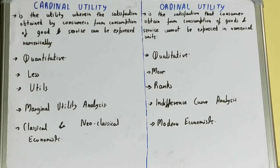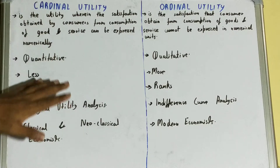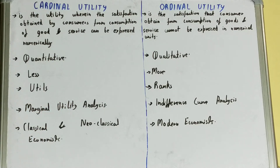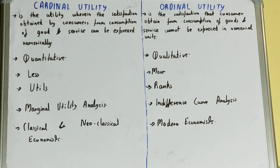If we talk about how realistic each is in a real environment, cardinal utility is very less possible in a real environment — that is, it is very less realistic. But ordinal utility is more realistic in nature.